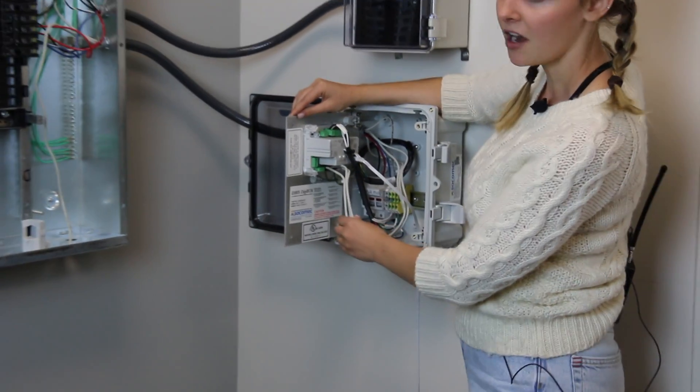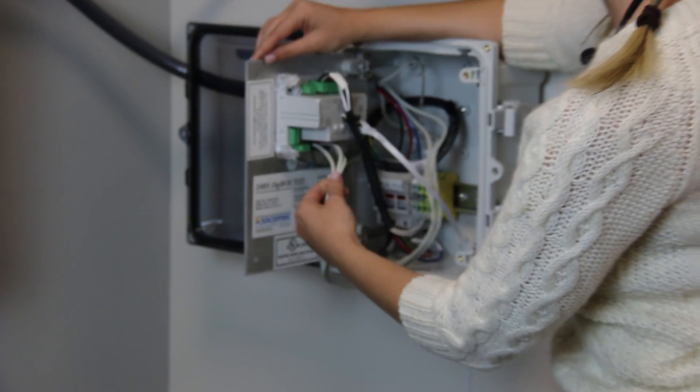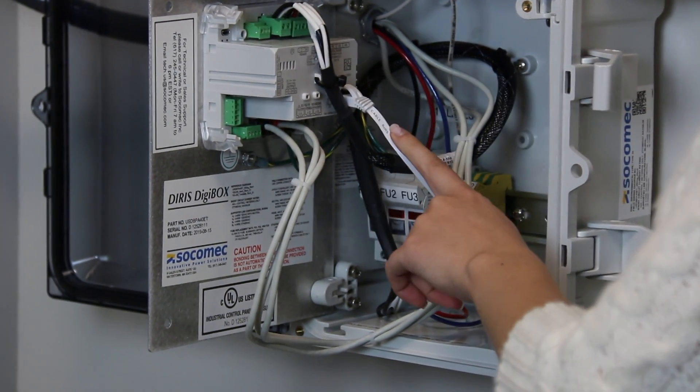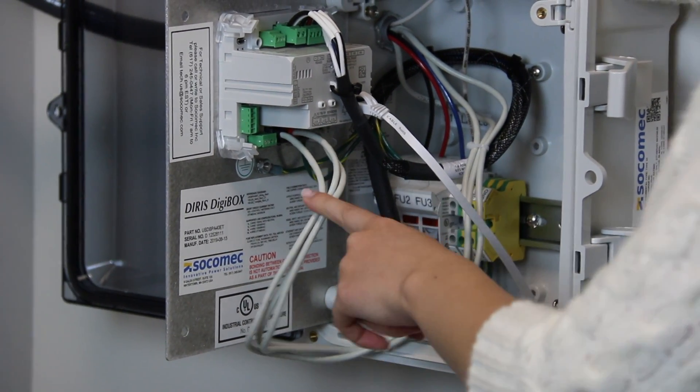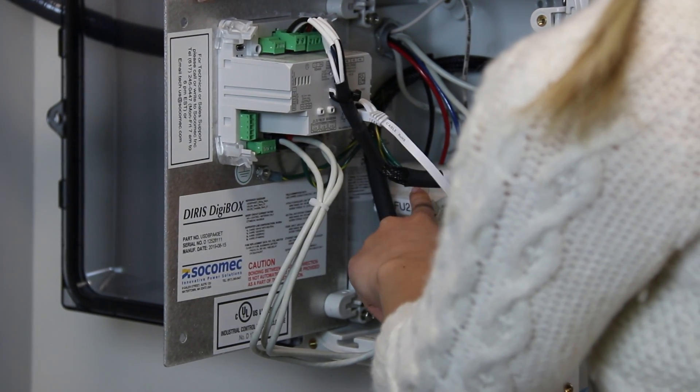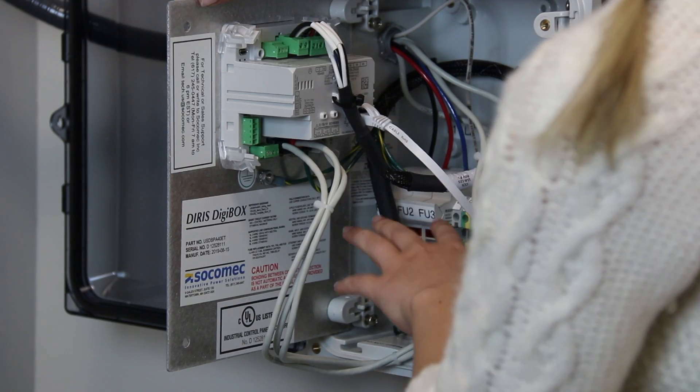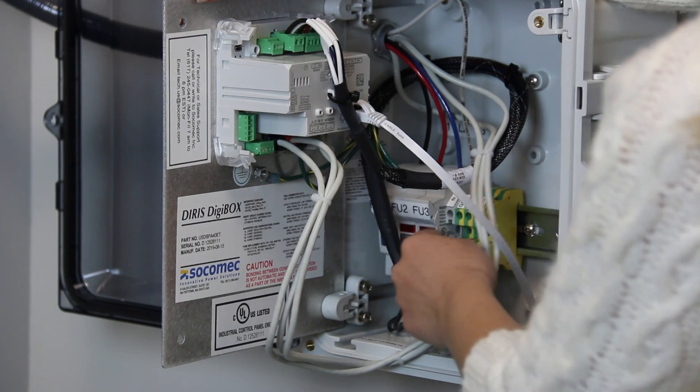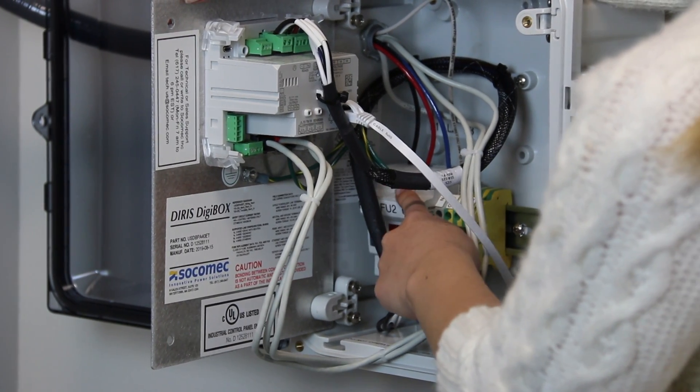As you can see, we already have our CTs and our Ethernet connected. We set this up a couple days ago. The great thing about this kit is it comes pre-installed with the meter, this fuse box, and this terminal. It also comes with the fuses, so you can just pop them in there and you're good to go.